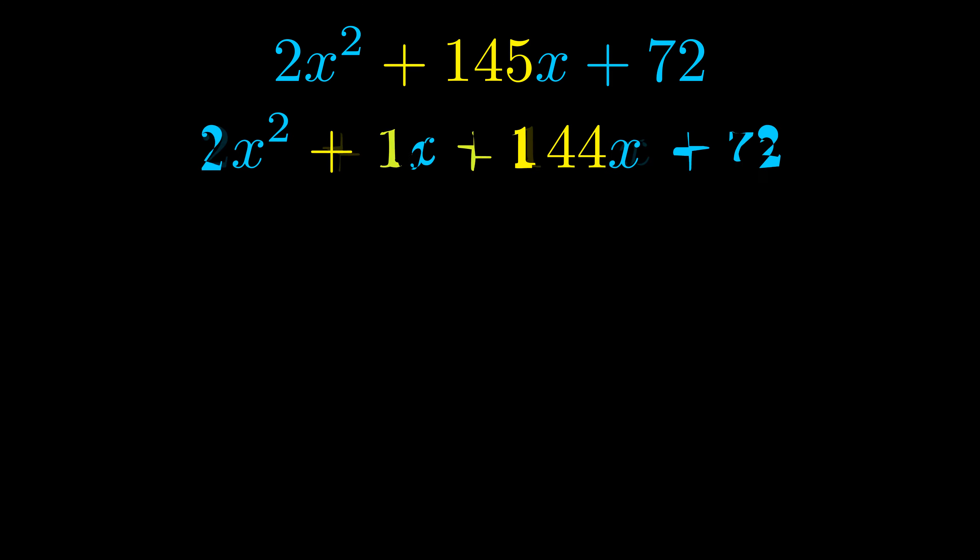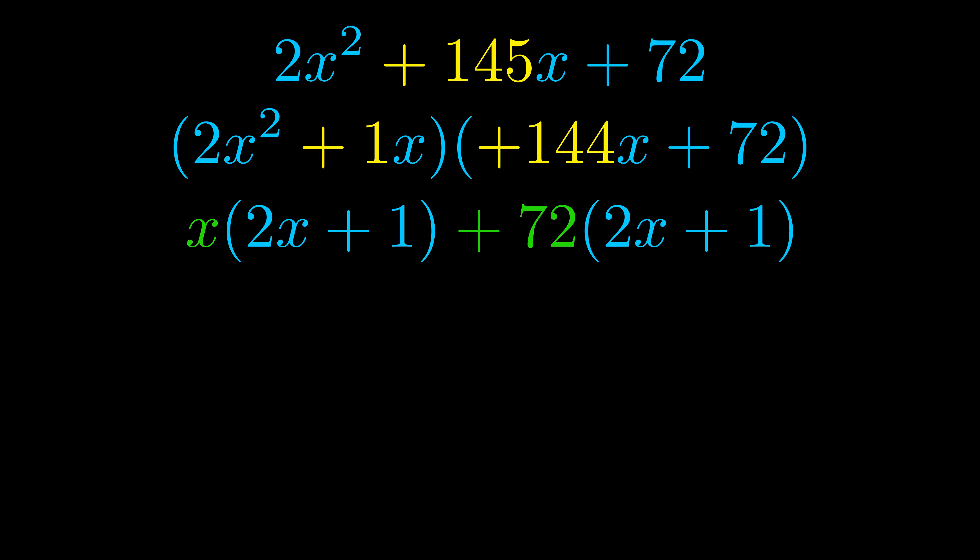Once we've done this we go ahead and put parentheses around the first term and the last term so that we can take the greatest common factor out of both terms. We can see the greatest common factor is now outside in green. Notice also how what remains inside of the parentheses is the same in both cases. The blue values are the same. Those blue values will become one of our factors and we will combine the two green values, the GCFs that we pulled out, to get the other one. And that is our fully factored equation.